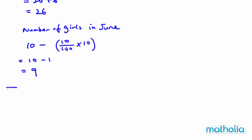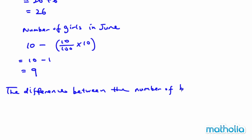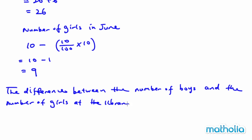The question asks for the difference. We have all the information: the difference between the number of boys and the number of girls at the library in June was 26 minus 9, which gives us 17.